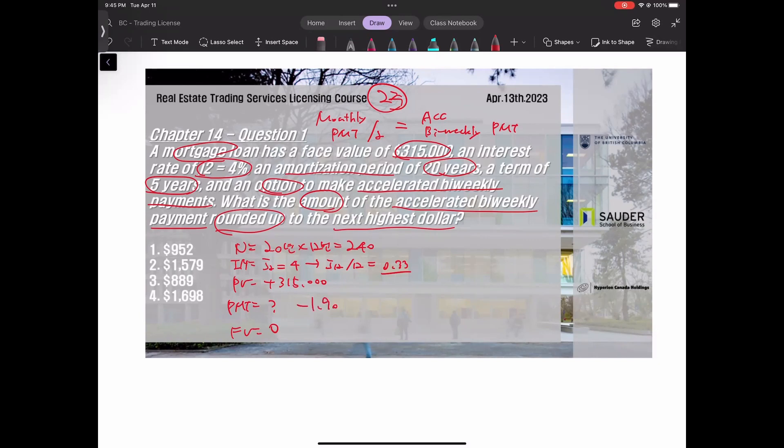Don't manually enter 0.33 and press I/Y. Instead, from the I/Y function result, press I/Y directly. Then exit and enter PV of $315,000, FV of 0, then compute PMT.